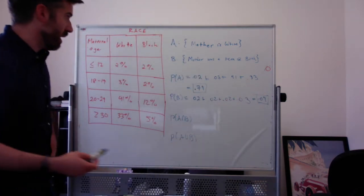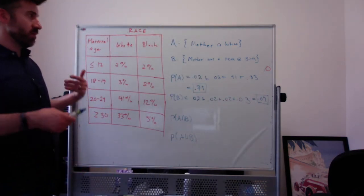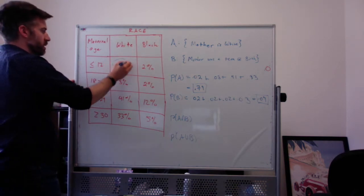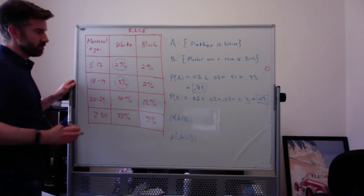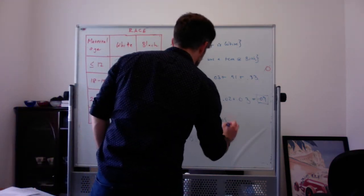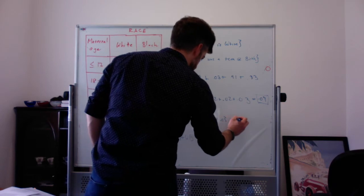The probability of A and B, or A intersect B, is the probability the mother is white and was a teen at birth. So that's going to be 0.02 plus 0.03, which is 0.05.